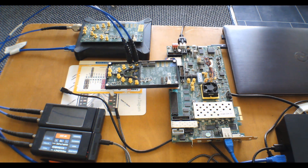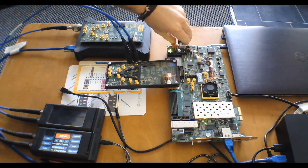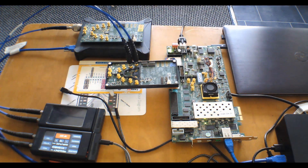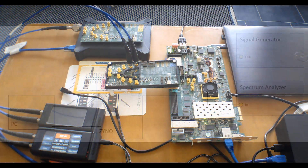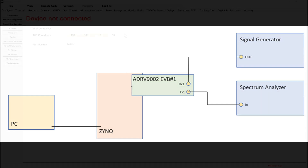At this point I'm going to power up the evaluation setup I have on my desk. On the ADRV9002 daughter card I'm using, I have the TX1 output connected to a spectrum analyzer and a signal generator connected to the RX1A input, as you can see in this block diagram. We'll be using these external tools to verify the operation of the device.